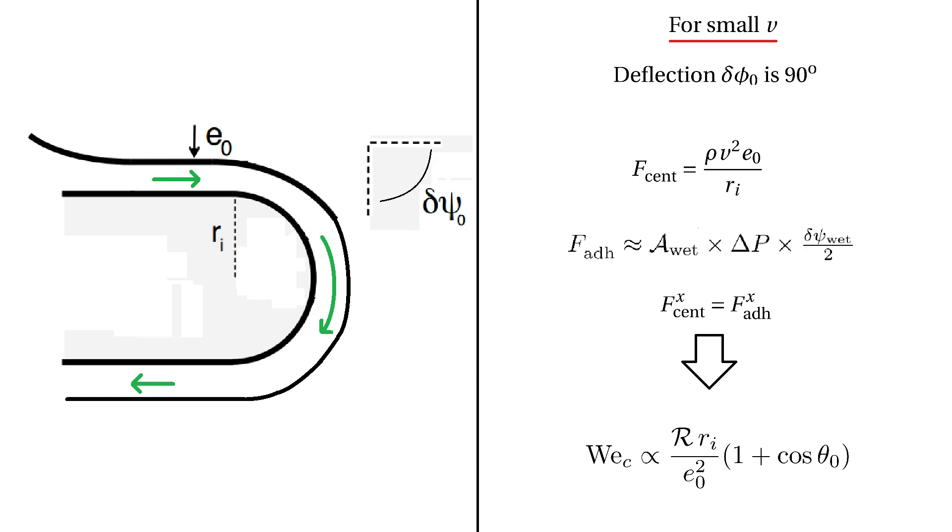With this relation, one can estimate a critical Weber number at which the teapot will start to dribble, given an equilibrium angle.